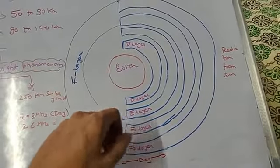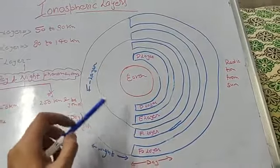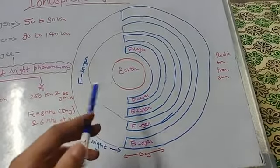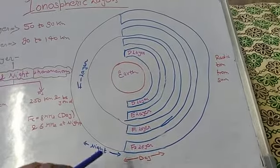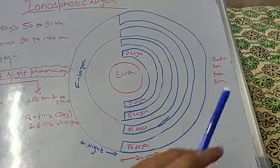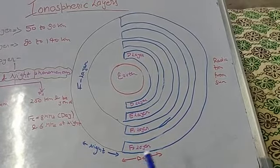It can be subdivided into D layer, E layer, and the F layer. The F layer can be further divided into F1 layer and F2 layer. This F layer division is due to the phenomenon of night and day. During day, the radiation from the Sun causes the F1 and F2 layers.